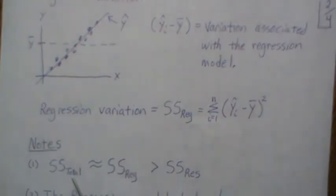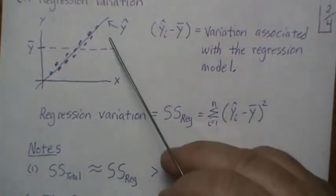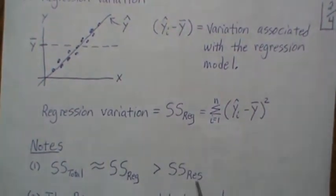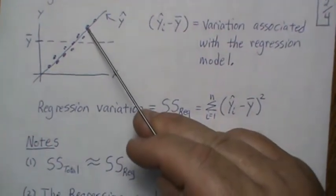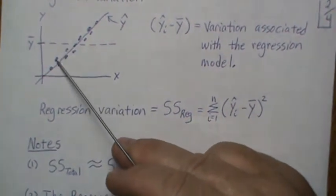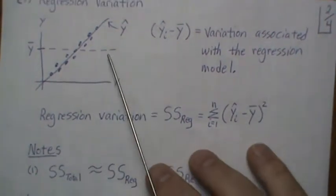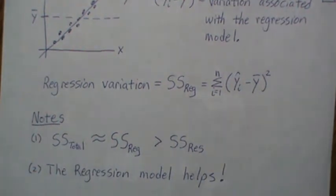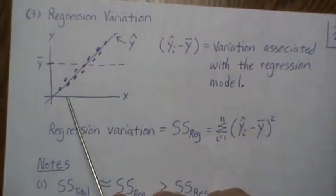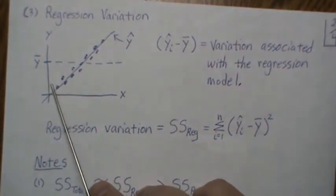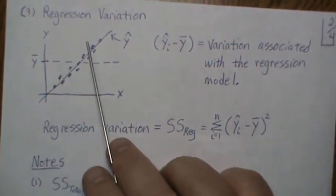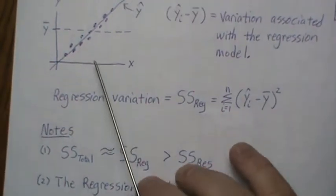Notice that the regression sum of squares and the total sum of squares are very similar — going from the line to the mean versus the data point to the mean are close. But the residual sum of squares — the data point to the line — is very tight around the line, a small variation. This means the regression model helps: if X is low we predict down here and we're usually right, much closer than just using the mean.